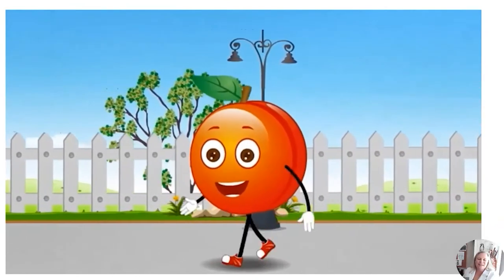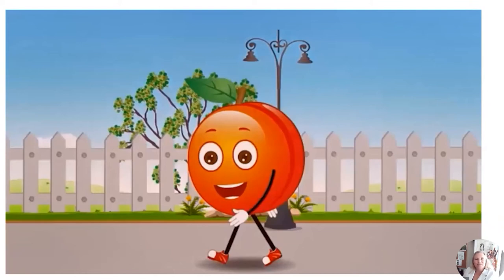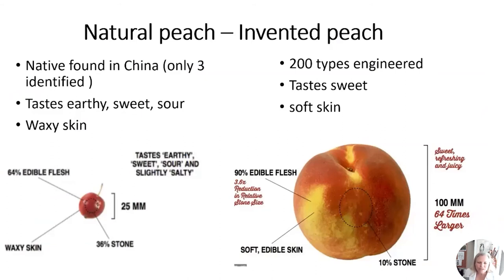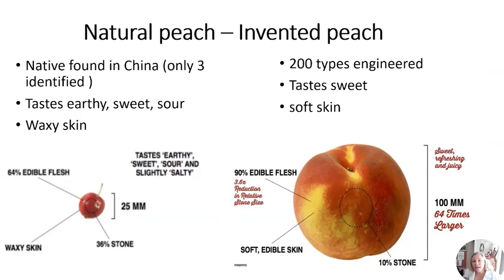The natural peach was originally a small tiny thing from three varieties found in China. It tasted earthy, sometimes sour sometimes sweet, had waxy skin, wasn't very edible, and was mostly taken up by the stone seed on the inside. Over the years we've created over 200 different types of peaches — this one tastes really sweet with very soft skin, very different from the original. That's just from each time picking the seeds from the peach we liked to eat and reproducing those seeds.